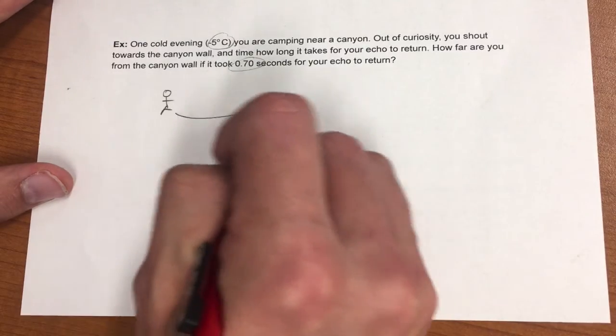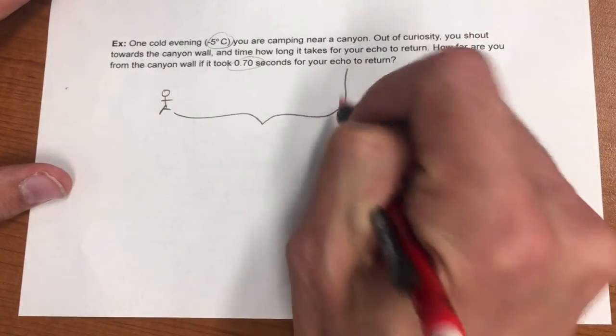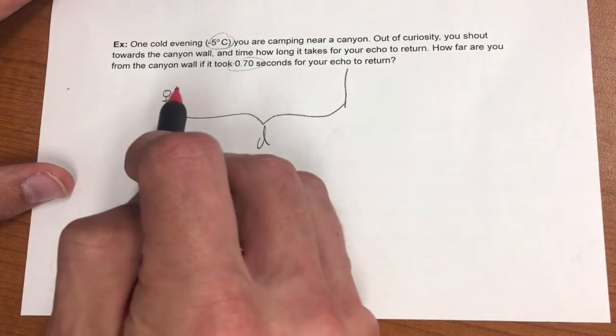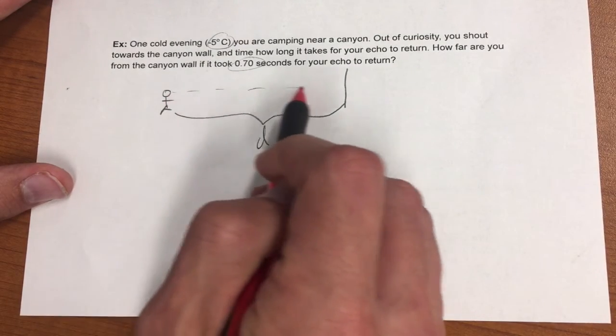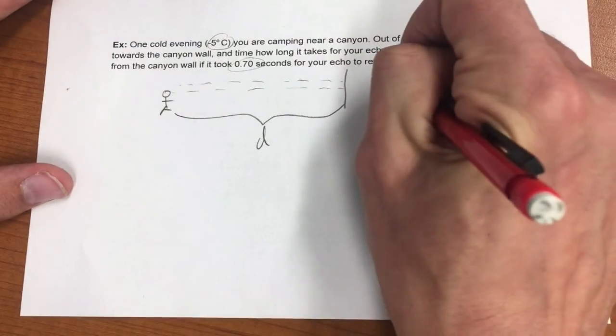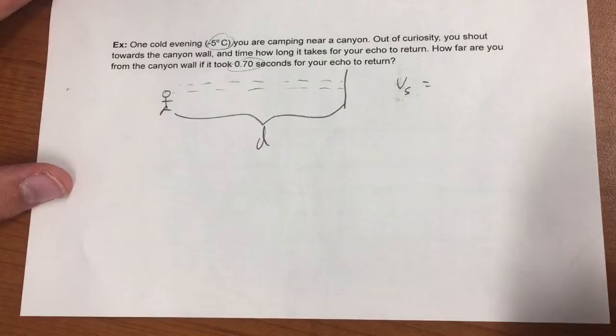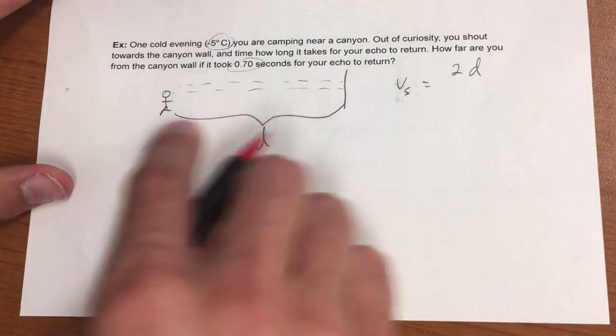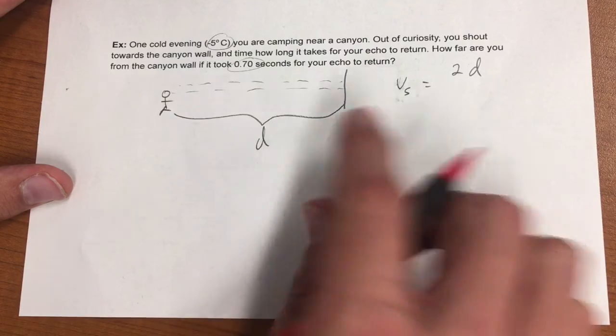So let's say that this canyon wall is d meters away. The sound has to travel there and back. So that speed of sound is going to be equal to distance over time where the distance is double this distance to the canyon.